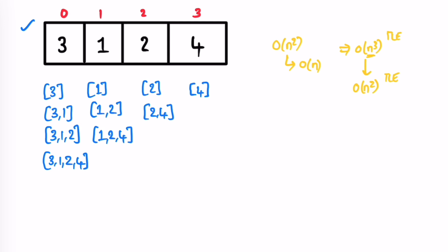Let's underline the minimum element in each subarray. The minimums are: three, one, one, one, one, one, one, two, two, and four. Adding them all: one three, six ones, two twos, and one four gives us 17, which matches the expected output.